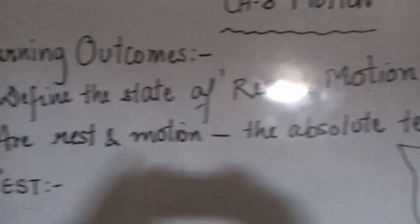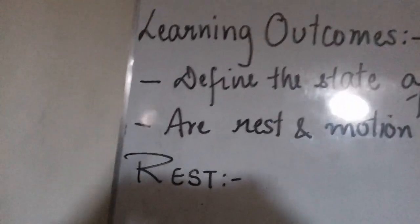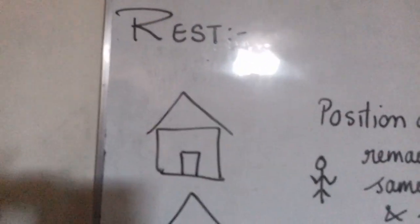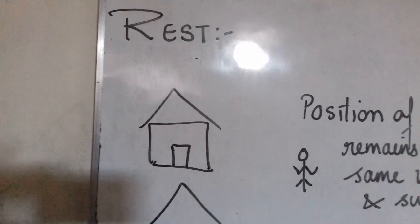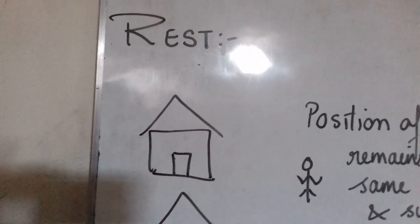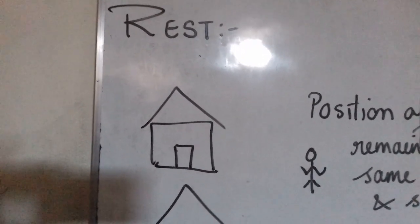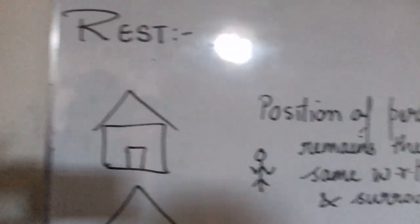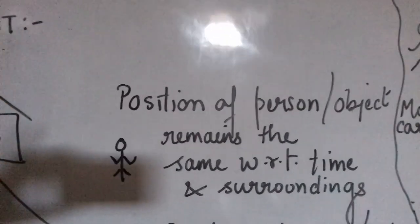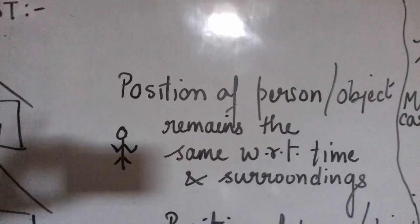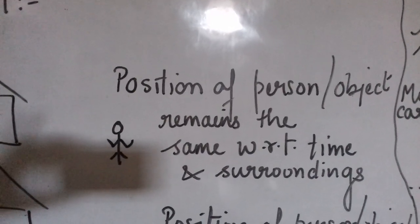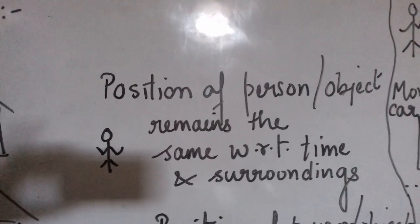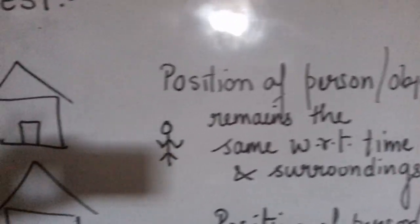Let us start with the topic of rest. Consider a person standing near a house. The house is in the surroundings of the person. If a person is standing near the house, with time his position is not changing with respect to the house. So we say the person is at rest. In other words, a person is said to be at rest when his position remains the same with respect to time and surroundings.